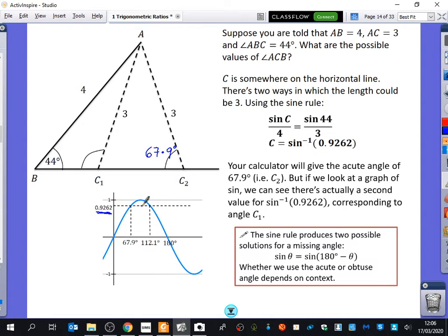And the value that we're interested in it being equal to is 0.9262, which runs along the top here. Clearly, it's crossing the sine graph in two different places. The calculator gives you the first one, which is 67.9. And then the second one is actually 112.1.